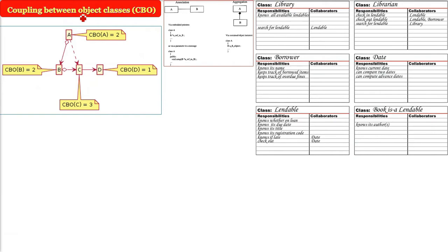Coupling between object classes. This is CBO. This is CK suite, one more metric. CBO, coupling between object classes. Now when you make a class, when you make the component or subcomponents or the modules, they are going to somewhat couple.